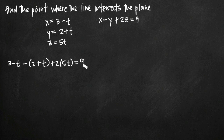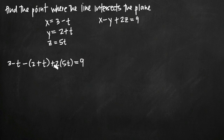Notice that instead of variables x, y, and z, we now only have the t variable in this equation. t, of course, is the parameter value. We want to solve for the value of the parameter where the intersection occurs.